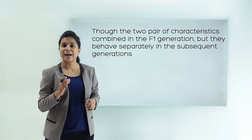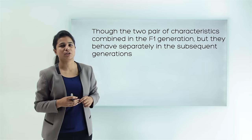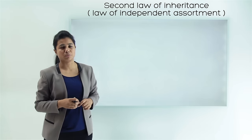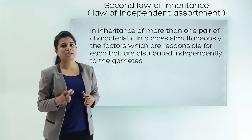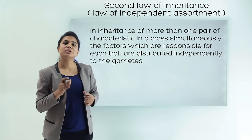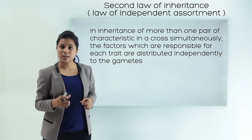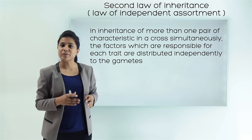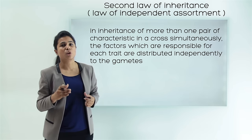On the basis of this observation, Mendel concluded that though the two pairs of characteristics combined in the F1 generation, they behave separately in the subsequent generations. With this, Mendel formulated the second law of inheritance: the law of independent assortment. It states that in the inheritance of more than one pair of characteristics in a cross simultaneously, the factors responsible for each trait are distributed independently to the gametes. For this dihybrid cross, seed shape and color behaved independently — neither the shape affected the color nor vice versa.